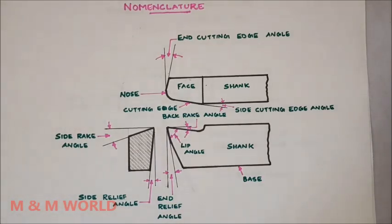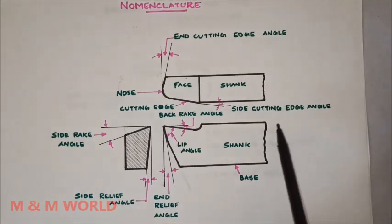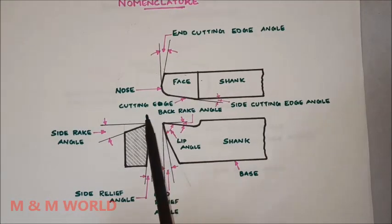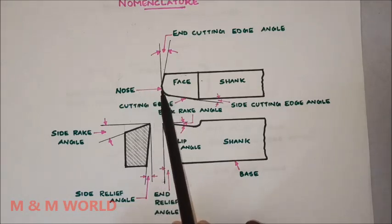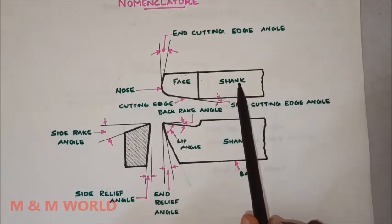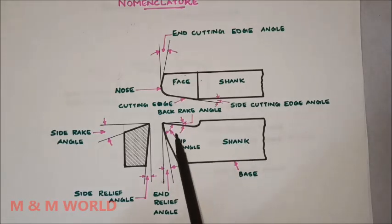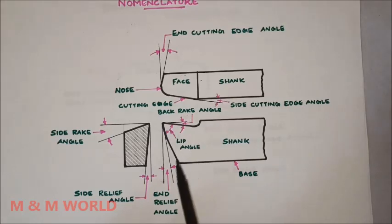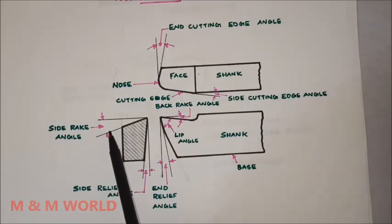Here you can see the detailed view of the tool. The end cutting edge angle, side cutting edge angle, cutting edge, and nose are visible. Also visible are the face, shank, base, lip angle, back rake angle, end relief angle, side relief angle, and side rake angle.